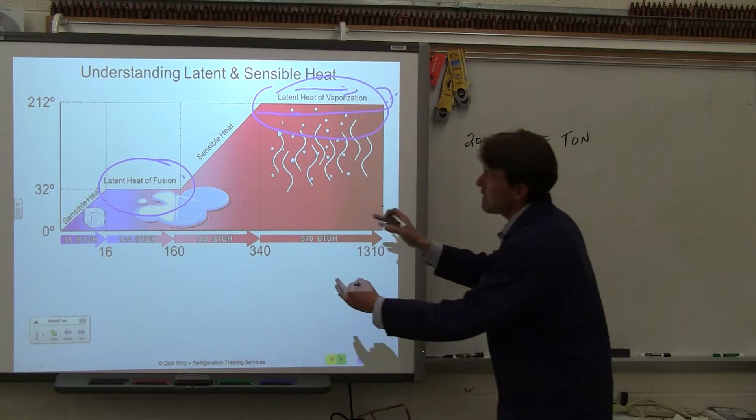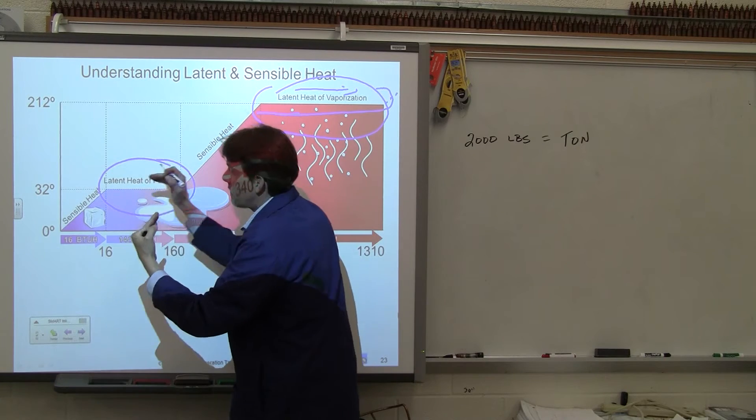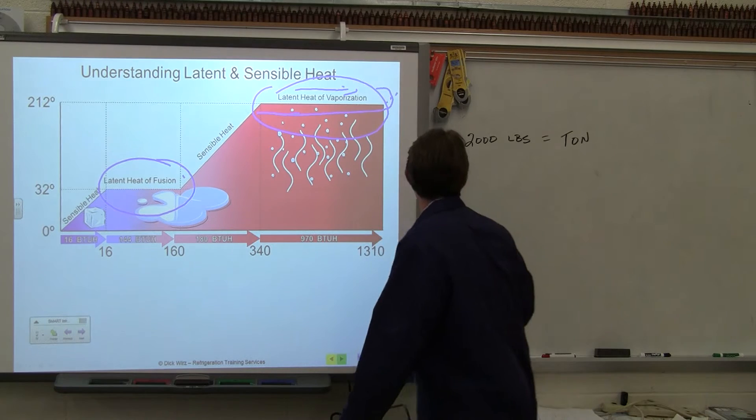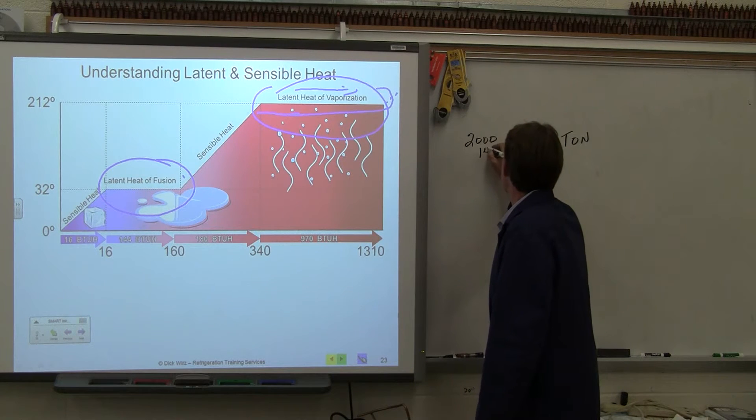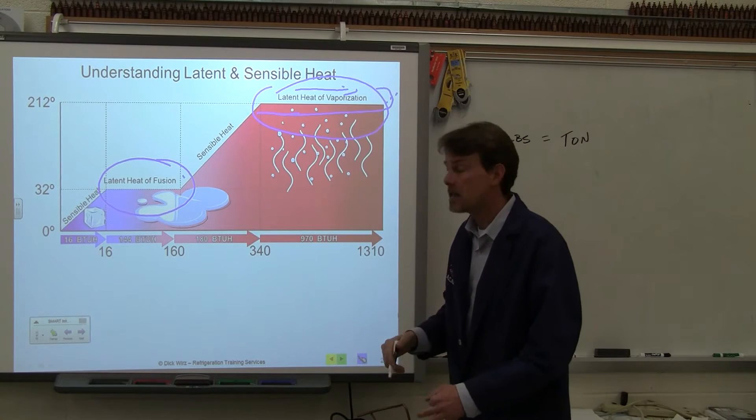If we wanted to calculate how many BTUs is needed to melt, or if I went the other way and took away the heat, then I could make a 2,000 pound block of ice by multiplying this by 144 BTUs, and that gives me the number 288,000 BTUs.